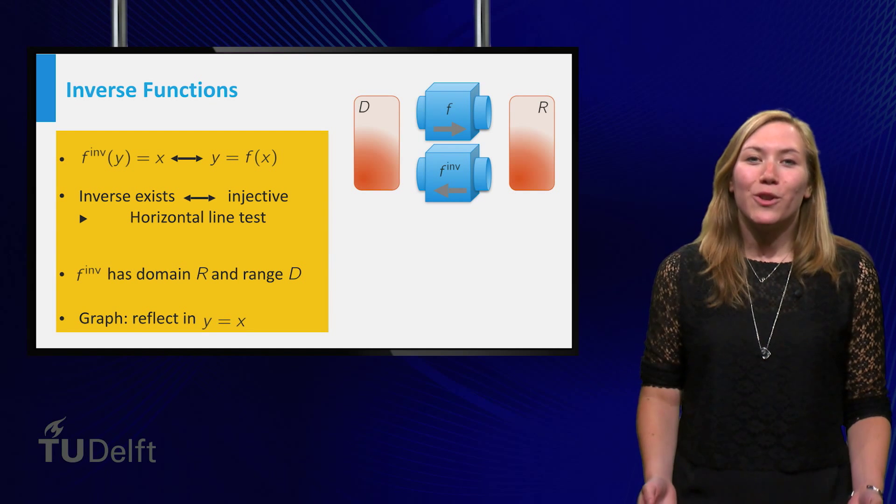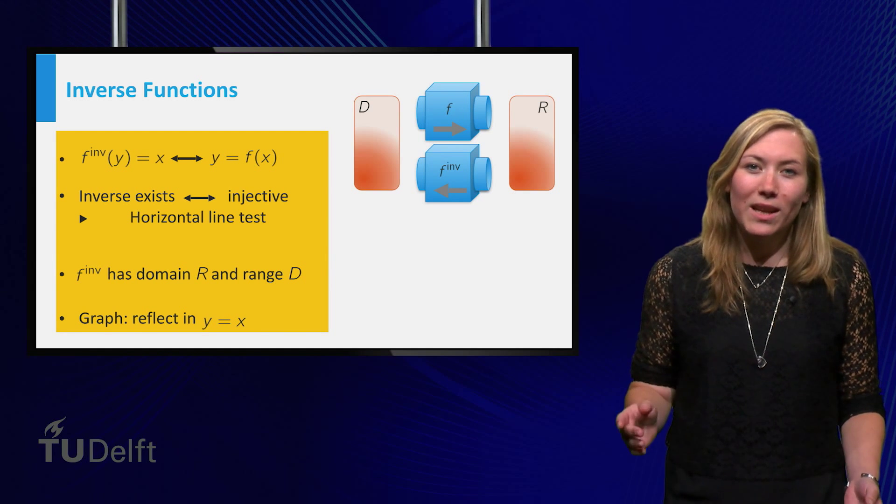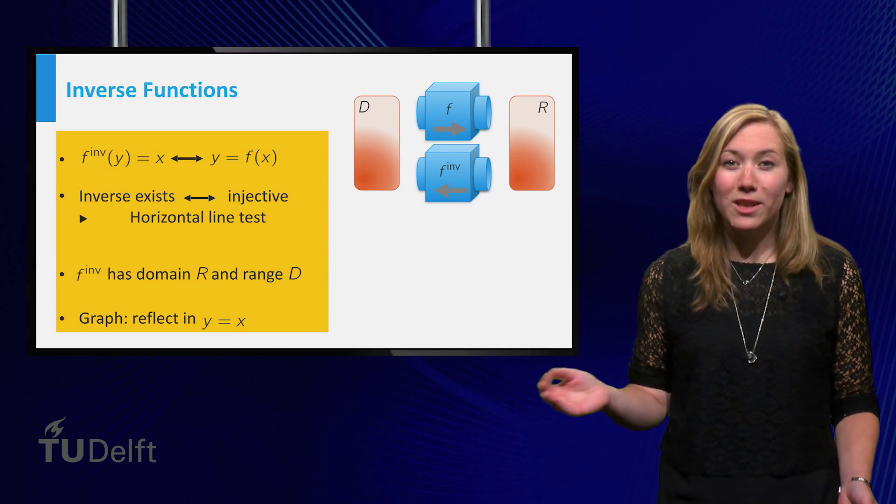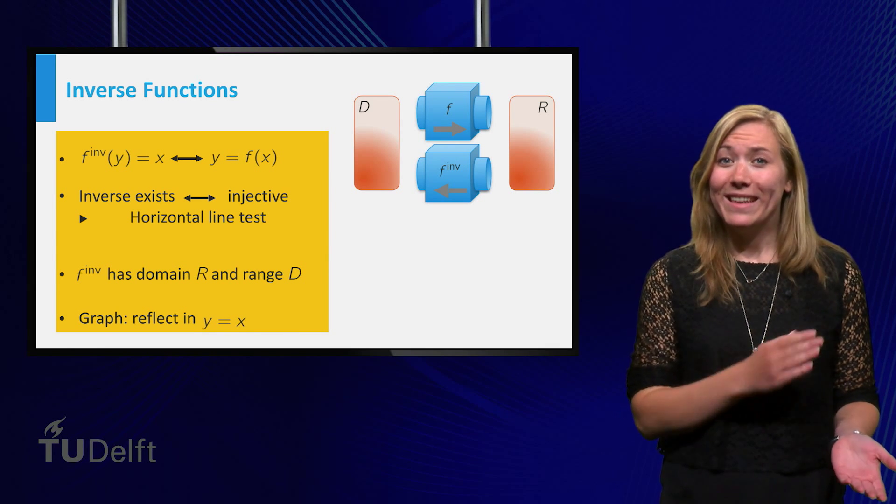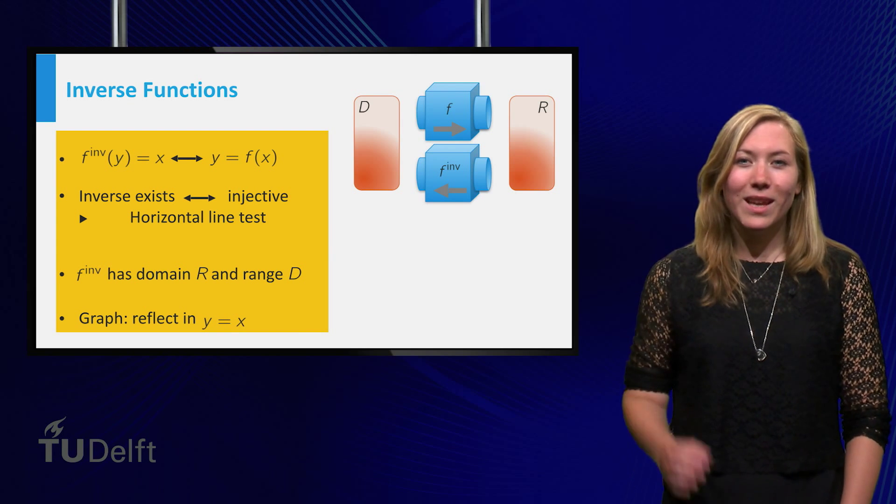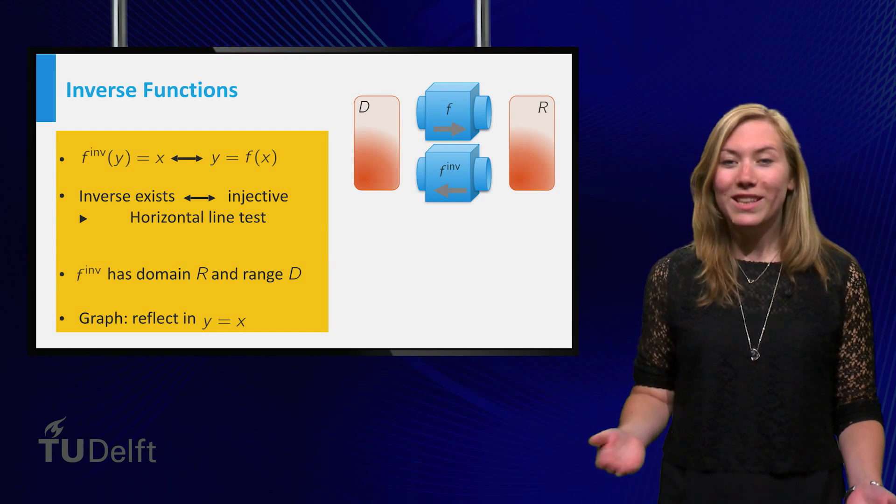An inverse of a function exists only if it never gives the same output for two different inputs. And you can check this by using the horizontal line test. If this happens, we call the function injective.